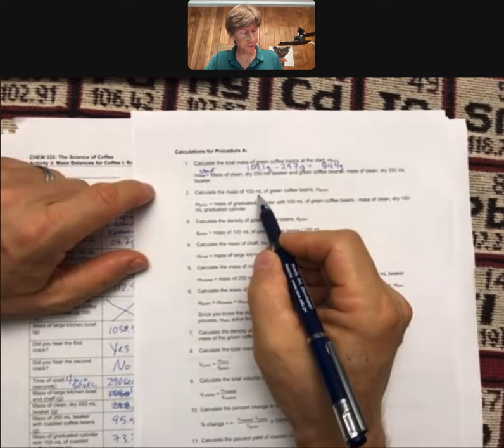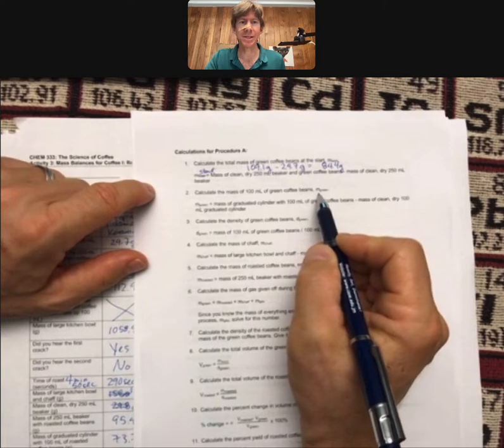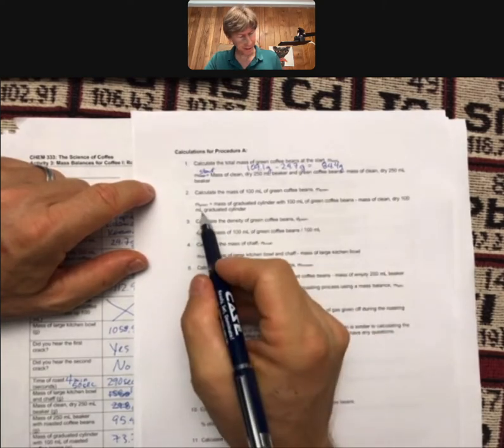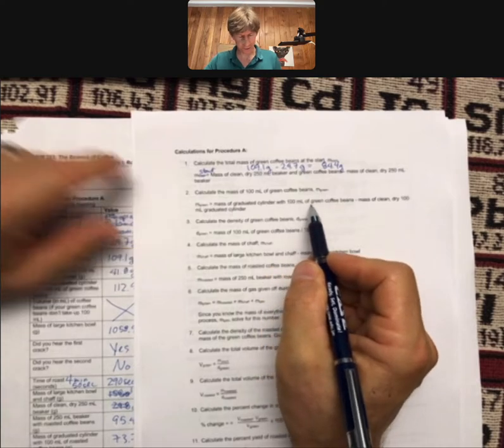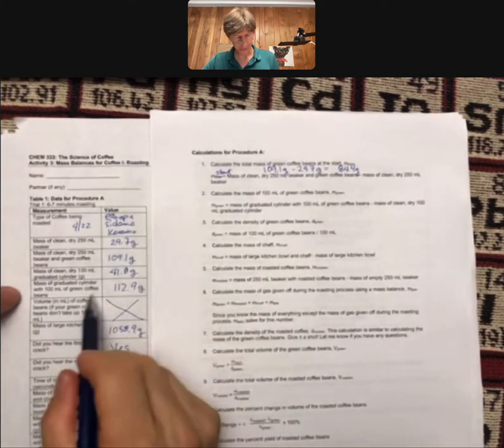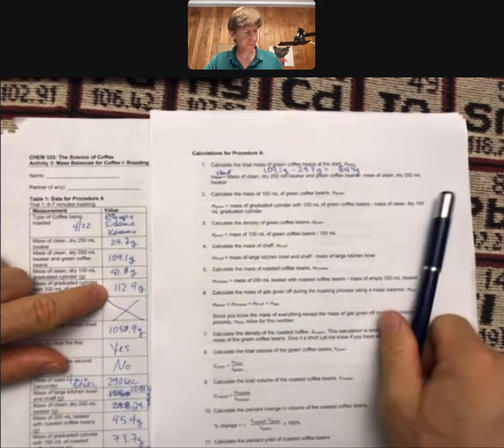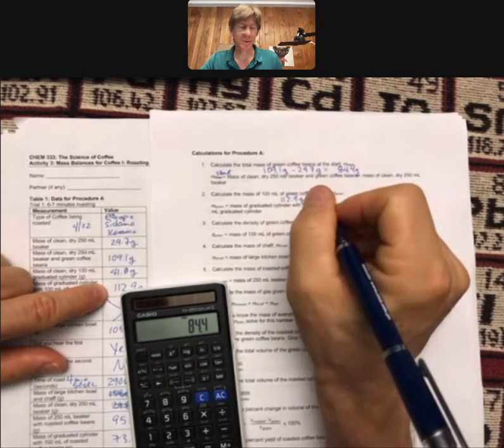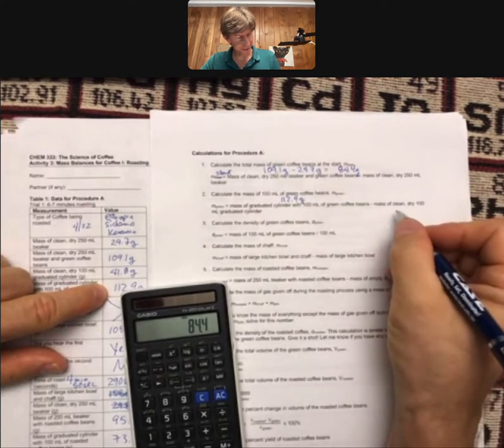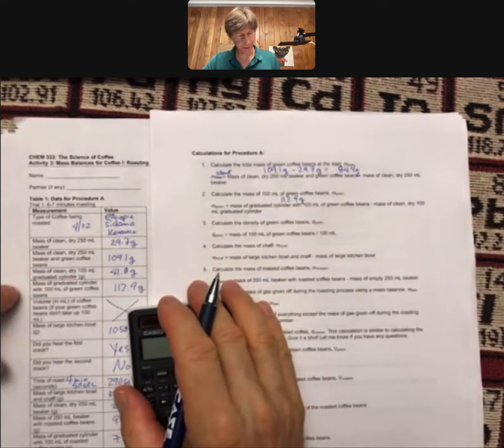This is m sub green, and it equals mass of graduated cylinder with 100 milliliters of green coffee beans, which is 112.9 grams for me, minus mass of clean dry 100 milliliter graduated cylinder.